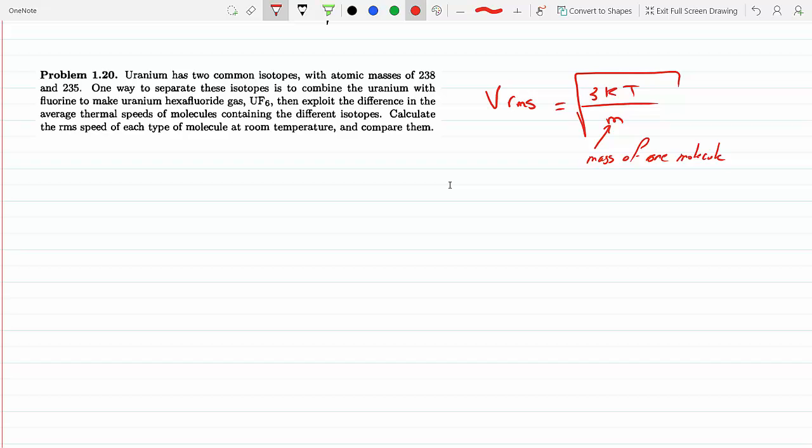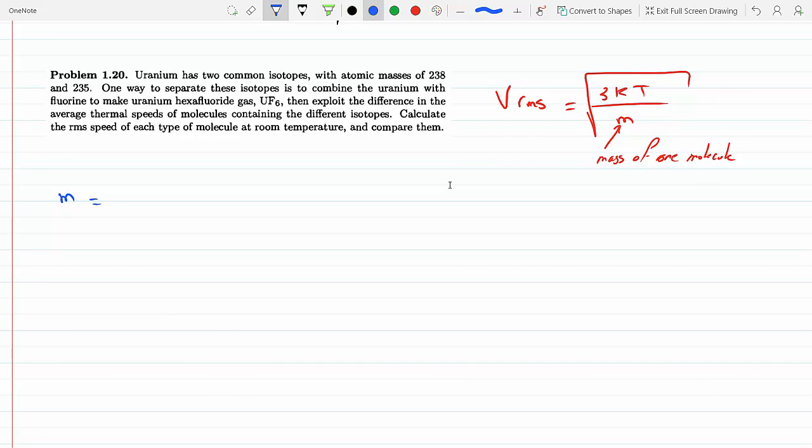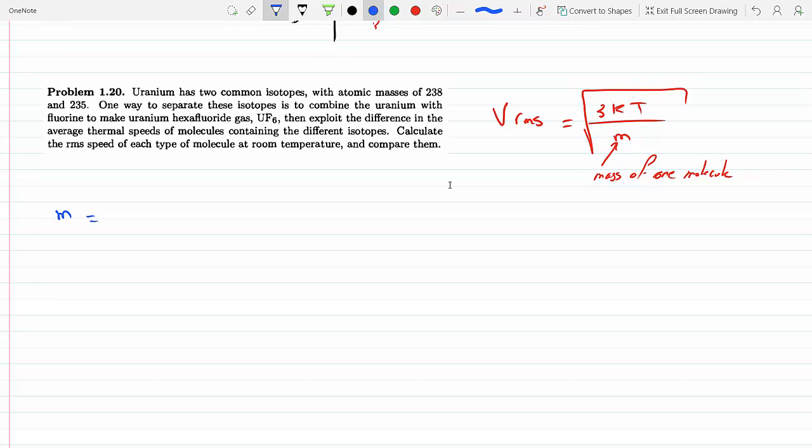That means M would have to equal... let's start with the uranium 235, U-235. We know that the molar mass of UF6 would be, we just add the masses from the periodic table, so we get 235 plus fluorine, which is 6 times 19. This gives us 349 atomic mass units or 349 grams per mole.